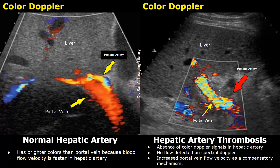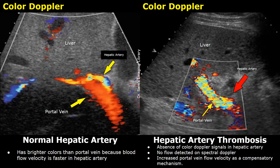In the right image, we have a case of hepatic artery thrombosis — a rare but serious complication of liver transplant. In this case, a thrombus has occluded the hepatic artery. We do not see color signals in the vessel next to the portal vein, meaning blood flow in the hepatic artery is absent. This led to increased turbulent flow in the portal vein as a compensatory mechanism, and we can see a mixture of colors in the portal vein.